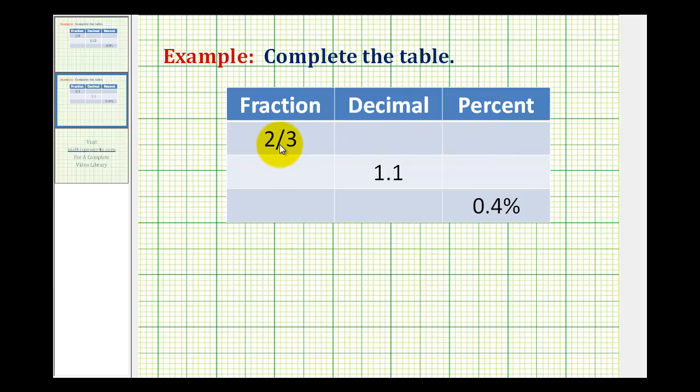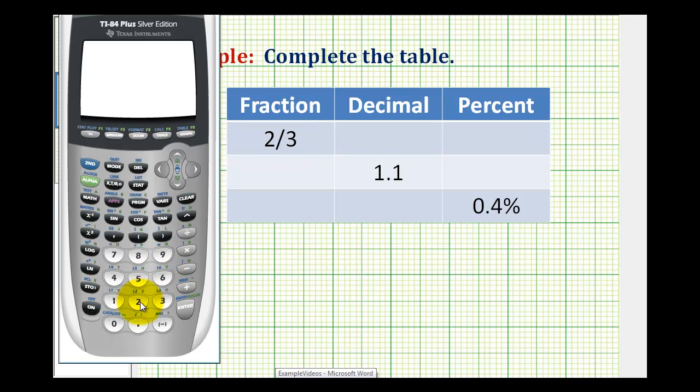A fraction bar represents division. So to convert a fraction to a decimal we can divide two by three. So two divided by three is equal to 0.6 repeating. And the proper way to write this decimal would be to use a bar to show the repeating digit of six. So it will be 0.6 with a bar over the six.